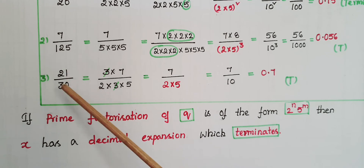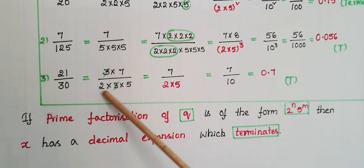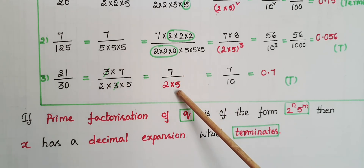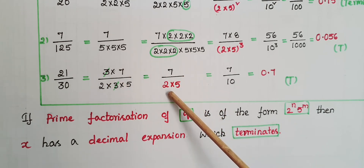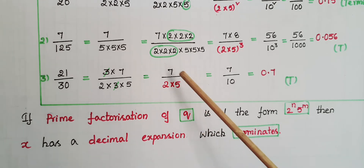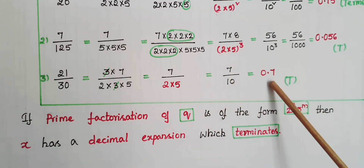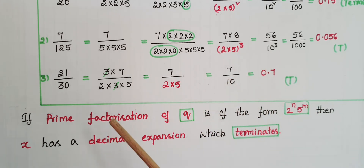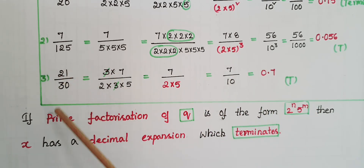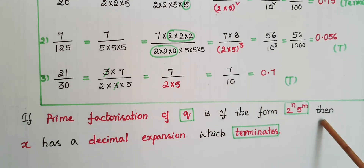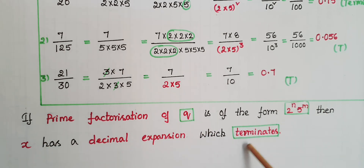Another example: 21 by 30 equals 3 into 7 by 2 into 3 into 5. Cancel the 3s: we get 7 by 2 into 5. The denominator is in the form 2 to the power of n into 5 to the power of m, so this rational number has a terminating decimal expansion. Converting to decimal form: 7 by 10 is equal to 0.7. So if x is a rational number p by q and the prime factorization of q is of the form 2 to the power of n into 5 to the power of m, then x has a terminating decimal expansion.